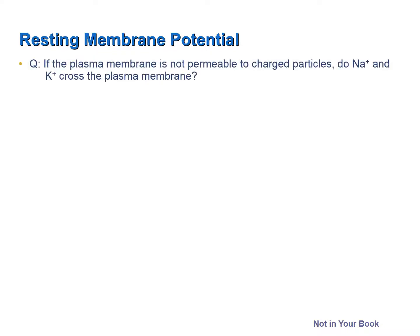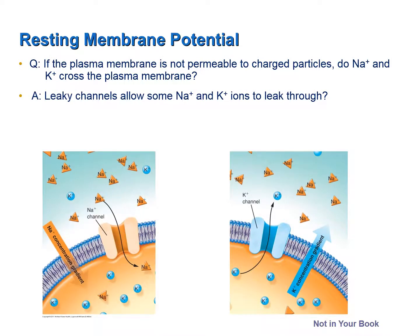Question: if the plasma membrane is not permeable to charged particles, do sodium and potassium ions ever cross the plasma membrane? The answer is yes. There are specific leaky channels located in the plasma membrane that allow a certain number of sodium and potassium ions to leak through, moving down their concentration gradients.